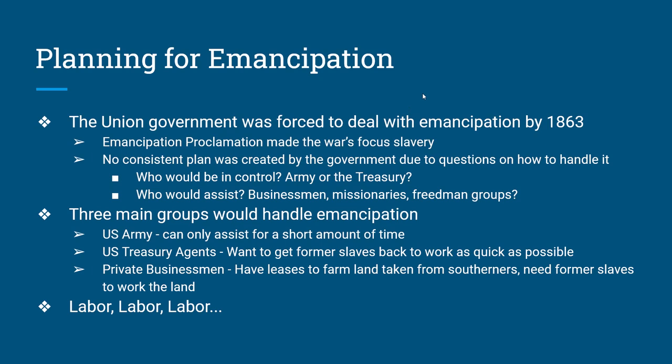The government also had to plan for emancipation, which really starts January 1st, 1863 with the release of the Emancipation Proclamation. The Union is forced to recognize that the war is no longer about preserving the Union — it is about ending slavery. In true fashion, the government comes up with no plan on what to do with emancipation. They don't know who's going to be in charge or who's going to pay for it. It could be the army, the Treasury, missionary societies, or private businessmen — all of those entities were asked to do something.